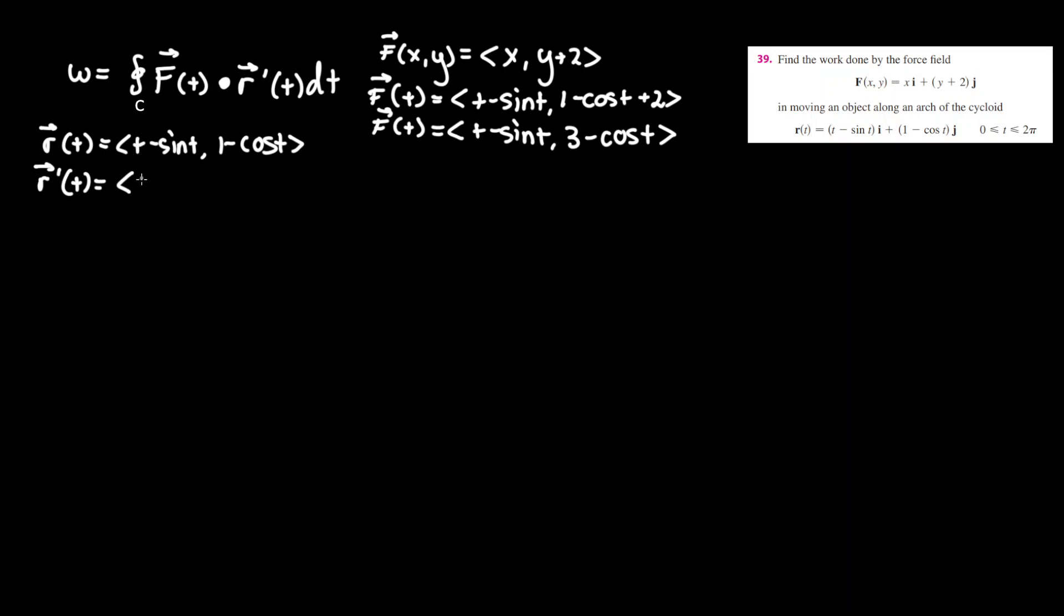So now taking the derivative or prime of that we get r prime of t equals, with respect to t, the derivative of t is 1. Derivative of sine is cosine. Don't forget that minus.